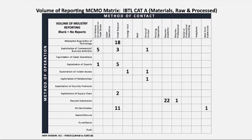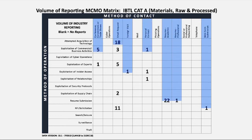Another IBTL category matrix example is category A — materials raw and processed — which includes ores, alloys, and rare earth minerals. We received approximately 70 SCRs concerning the targeting of materials raw and processed, spanning 7 of the 12 methods of contact, with email requests and academic resumes representing the most used vectors in targeting this technology.